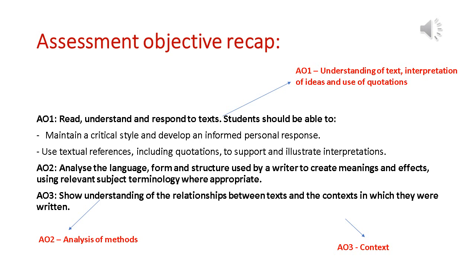Assessment objective two: you have got to be able to analyse the language, form and structure used by the poet to create effect. So with poetry we'll be looking at things like simile, metaphor, personification. We'll also be looking at structural techniques like enjambment, volta, caesura. You might be looking at rhyme, rhythm. You may also be looking at the form of a poem — for example whether it's a sonnet in the example of Ozymandias. You can also for AO2 talk about sound devices because poetry is supposed to be listened to and read out loud, such as techniques like sibilance.